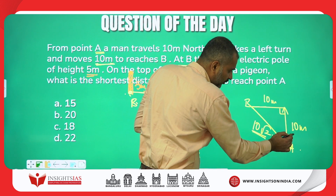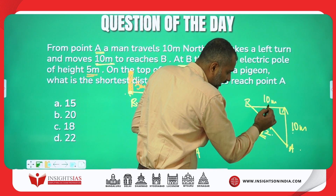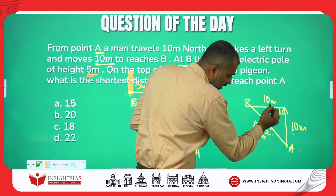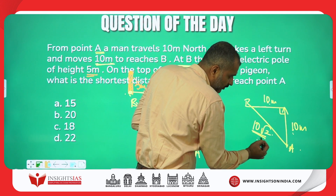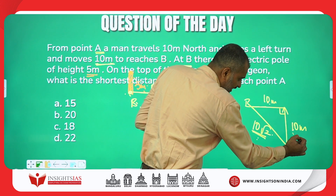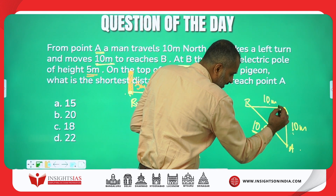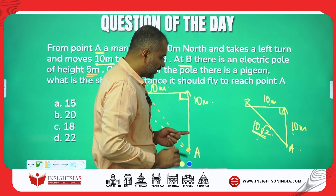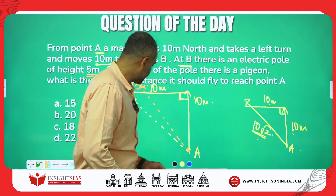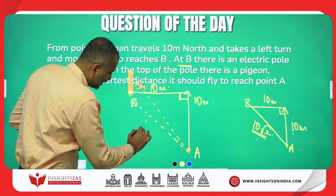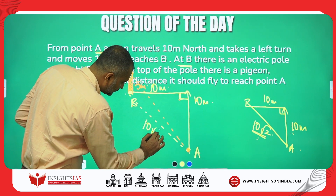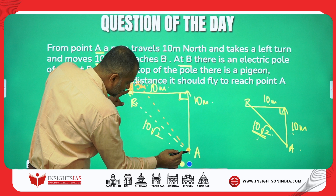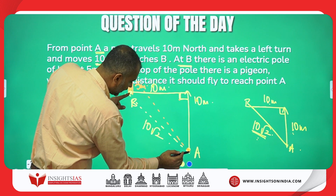If both sides are 20, the hypotenuse is 20√2. If both are 30, it's 30√2. If both sides are x, the hypotenuse is x√2. So the distance from point A to point B on the ground is 10√2.